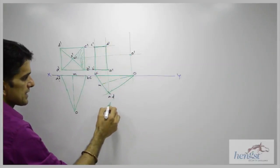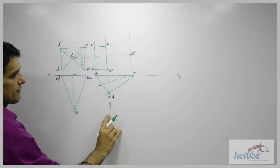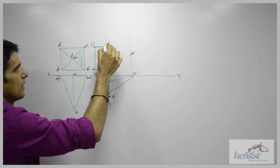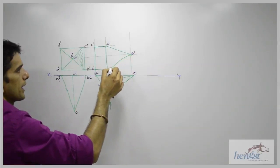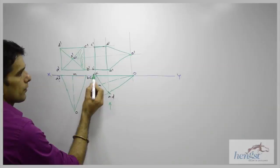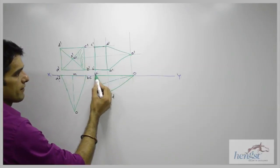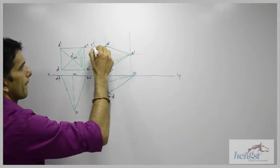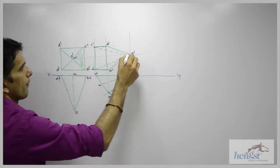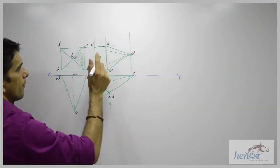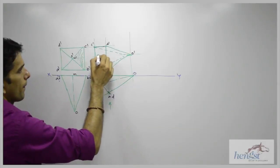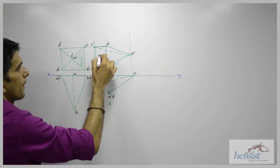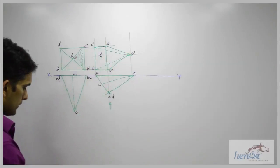Now see in this, observer will see from here. So when observer sees from here, AD is nearer to him. So AD will be down. A dash, D dash will be down. Now O, B, O, C is away from the observer. So that will be dotted. This is M dash. And this is axis.